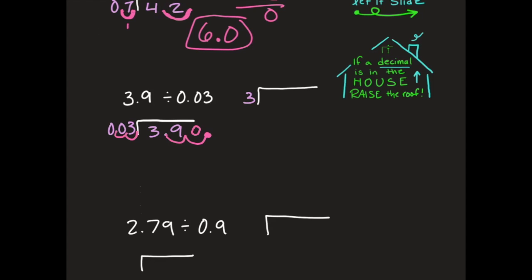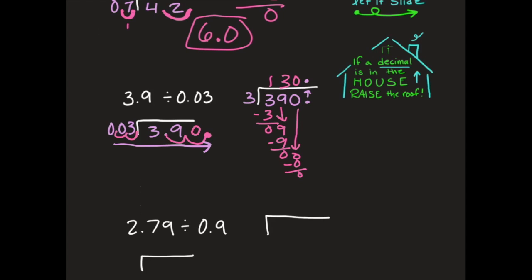Now I'm going to rewrite my math problem. I have 3 on the outside and 390 on the inside, with my decimal point at the end. If a decimal is on the side, let it slide — that's what we did. And if the decimal is in the house, raise the roof — take that decimal point and put it right up top. Now I can do my division: 3 goes into 3 once, bring down 9, 3 goes into 9 three times, bring down 0, 3 goes into 0 zero times. When you subtract you have nothing, and your answer is 130.